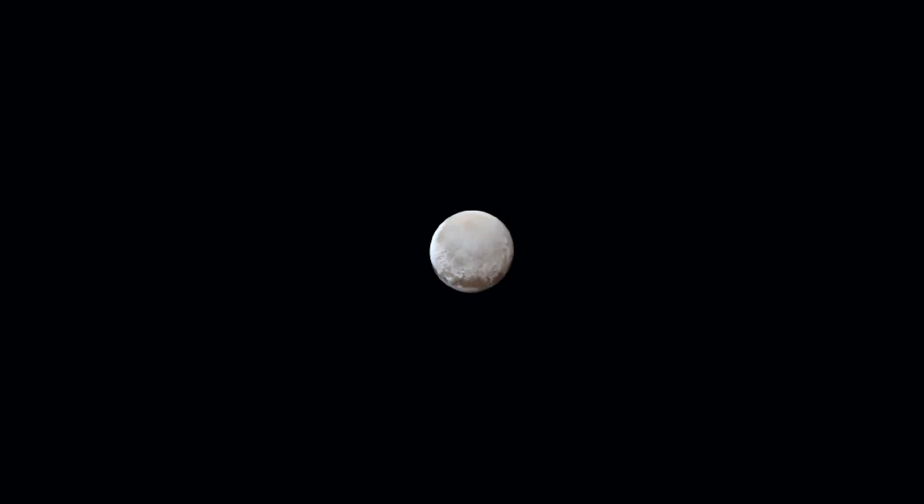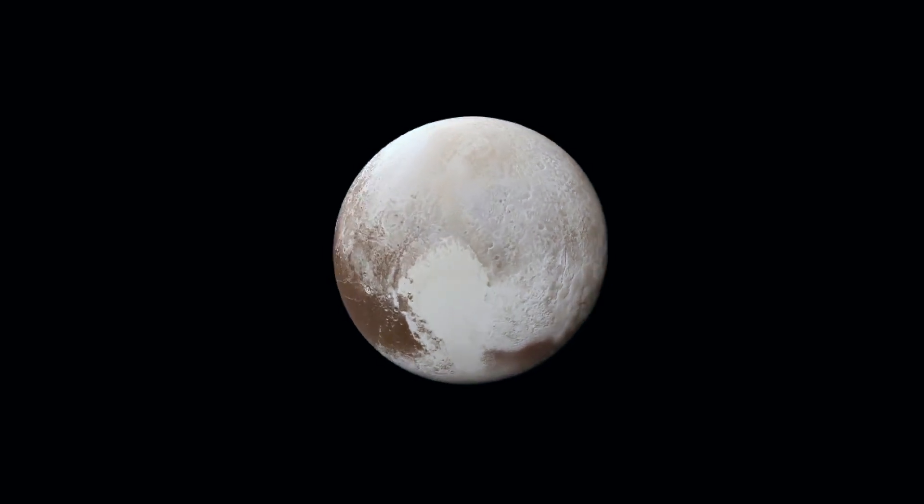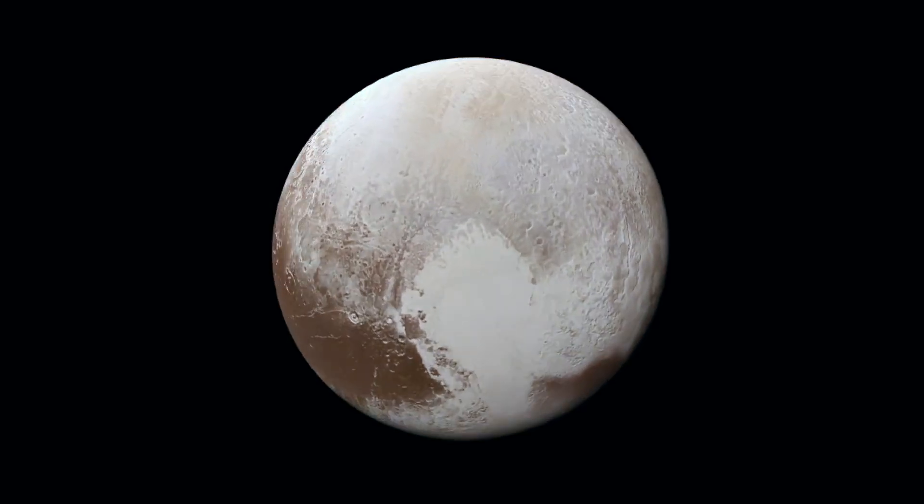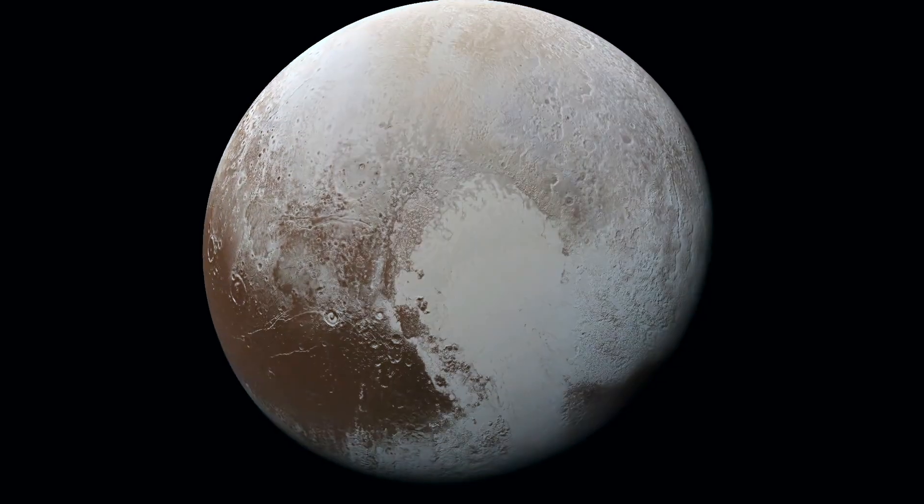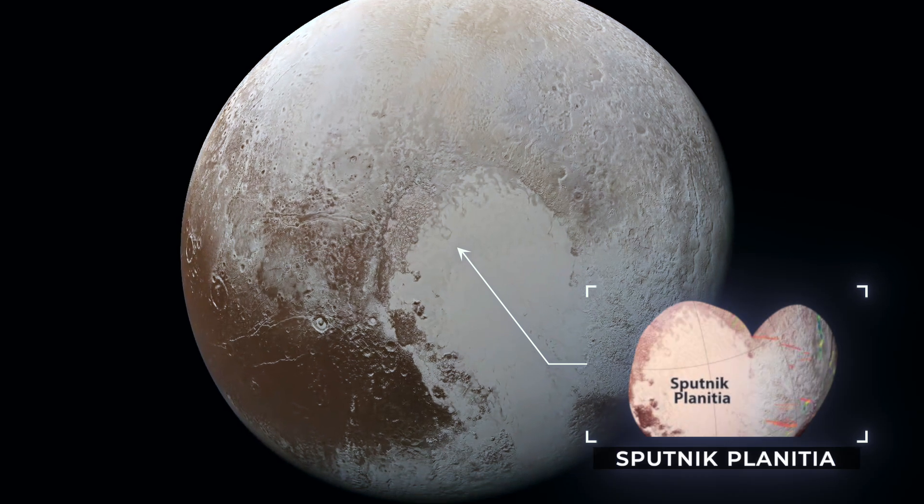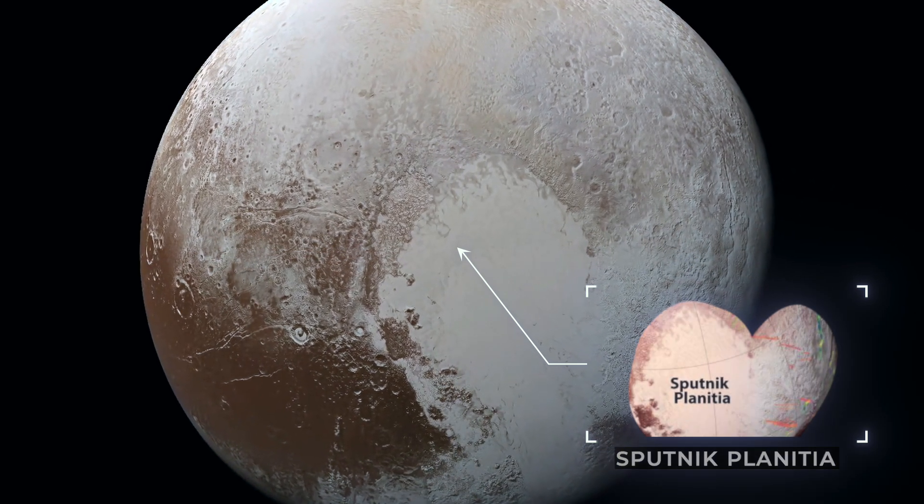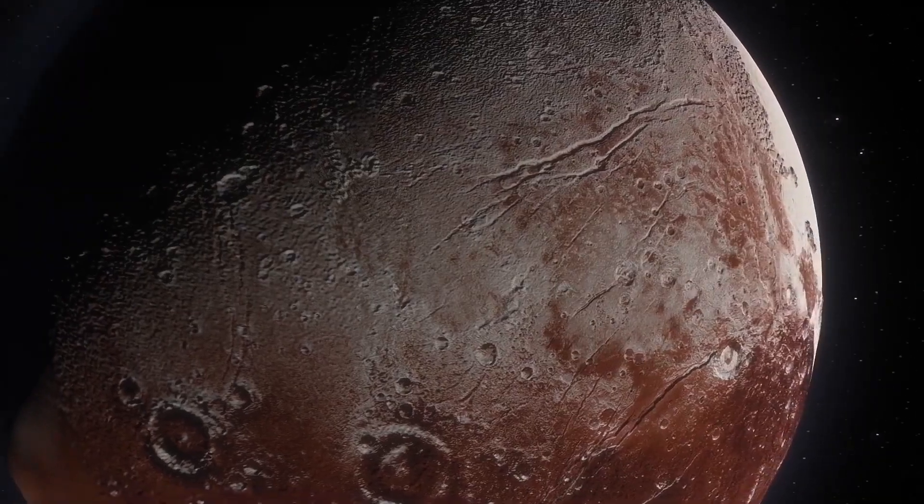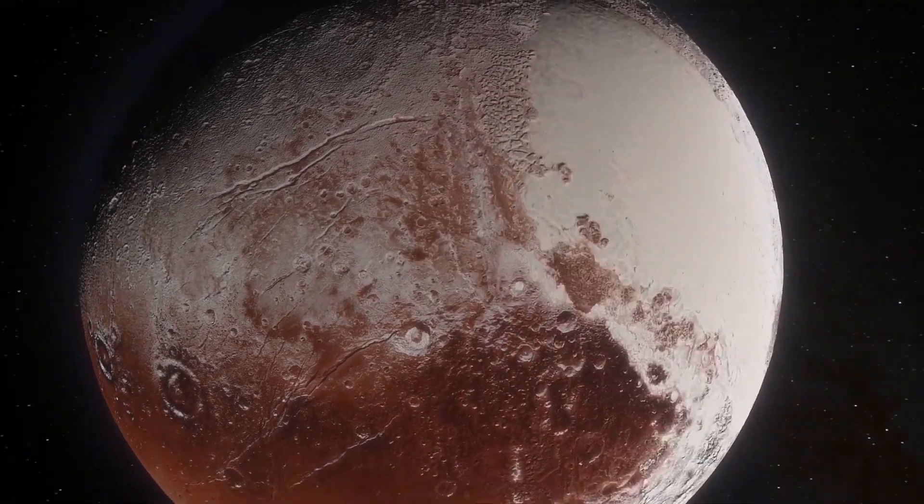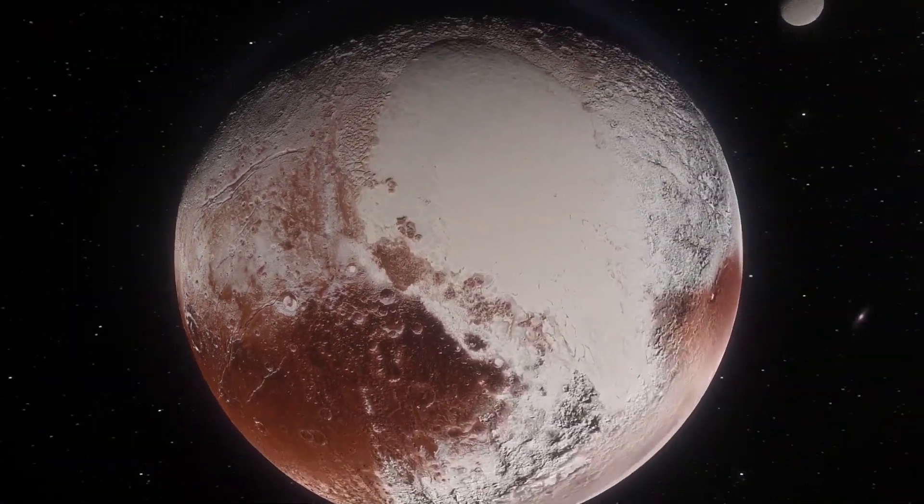Images from New Horizons also revealed an odd, roughly teardrop-shaped feature that straddles Pluto's equator. This region has been dubbed Sputnik Planitia. This approximately 500-mile-wide plain is extraordinarily smooth. There are absolutely no signs of impact craters, which indicates that the surface is geologically very young.